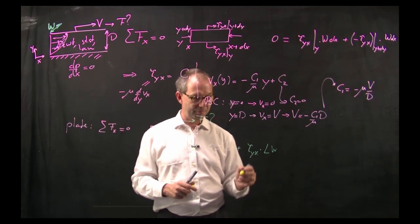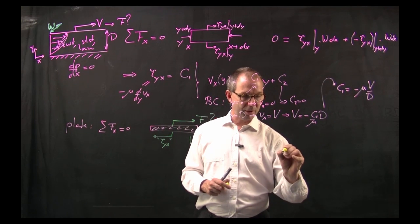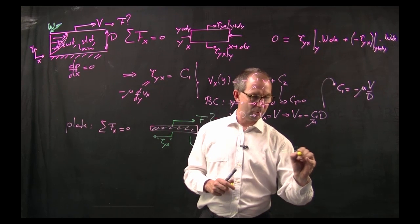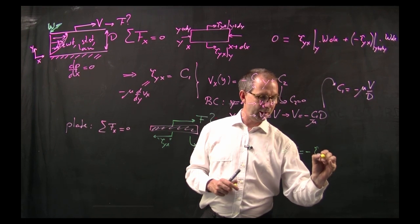Length of the plate times width of the plate. And thus I find F equals minus tau yx times L times W.